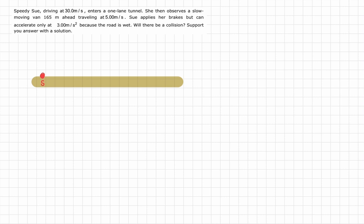Ahead of Sue is the van. So let's say, for example, this is where the van was. The distance between the van and Sue was 165 meters.